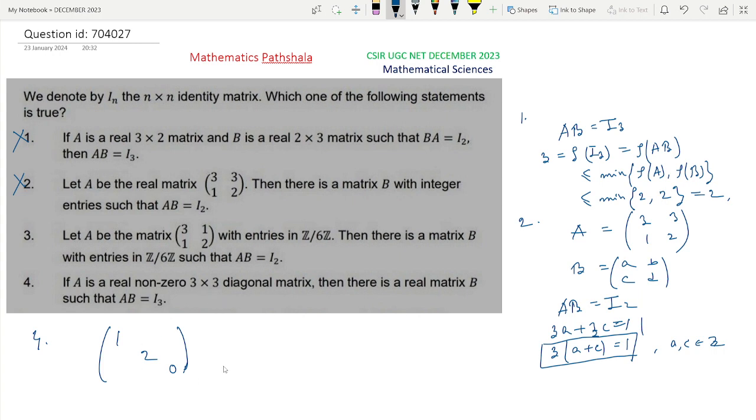Take one matrix like this where rank of A will be 2 and the other element will be 0. Then rank of AB must be less than or equal to minimum of rank A, rank B, so it will be less than or equal to rank A which equals 2. So it cannot equal I3, because if AB equals I3 then rank of AB would equal 3. So this case cannot happen. Option 4 is not the correct option.